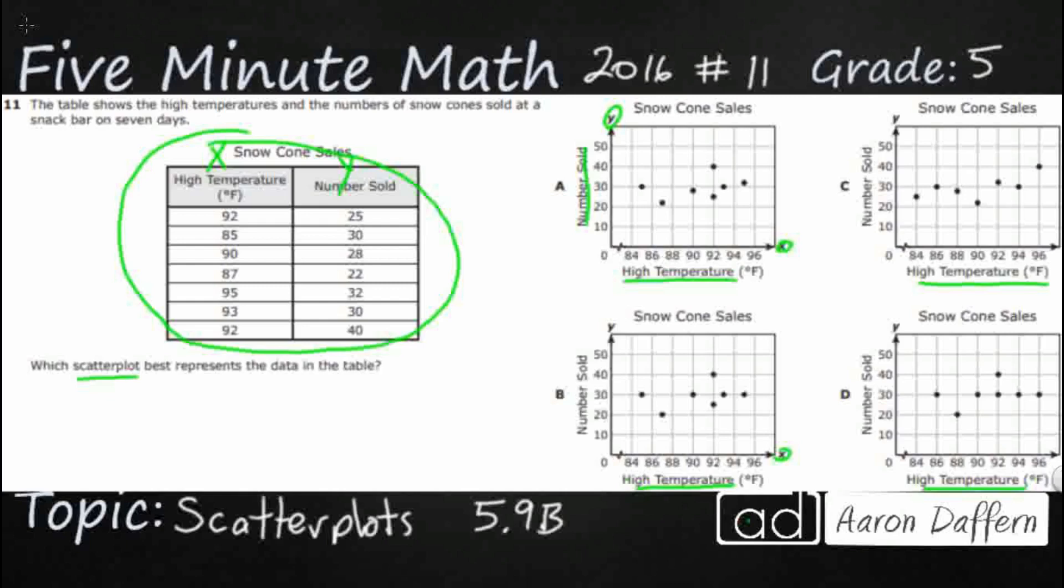So first let's match what we can see here. And you notice our high temperatures, they're not even in order. We've got 92, and then 85, and then 90, so they're all over the place. So let's just look for this first pair, 92, 25. And let's see if we can find that in any of these representations here. So here's my 92, and then my 25 is going to be right there between 20 and 30. So I'm going to have to kind of guesstimate on some of these. So 92, 25, so we're looking good on A. I'm going to put a little check mark.